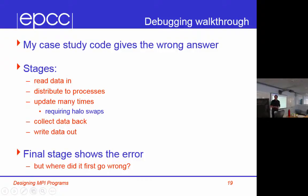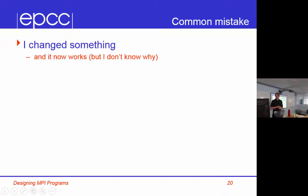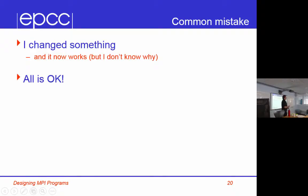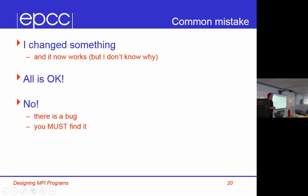Common mistake: I changed something and now it works but I don't know why. If you had a bug and put a print statement in and it went away — no, no. We had one of our best MSC students who didn't get the top mark because in the first month of his project he had a bug that kind of went away, so he ignored it. Then when running on Archer on thousands of processes it came back. There's a bug — you must find it. Just because it goes away doesn't mean it's gone. If it crashed under Cray Fortran but compiled under GCC, switching to GCC is not a solution — the bug is still there.